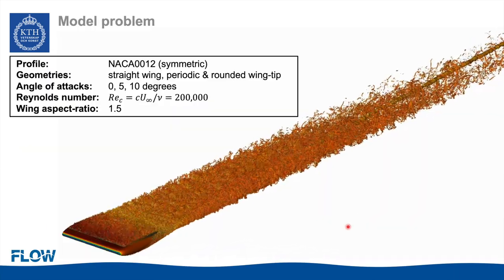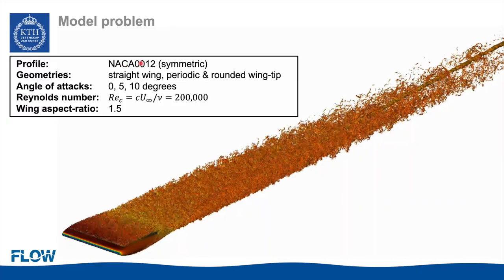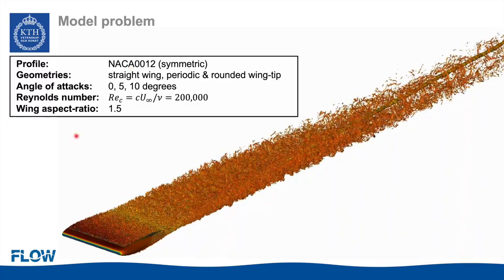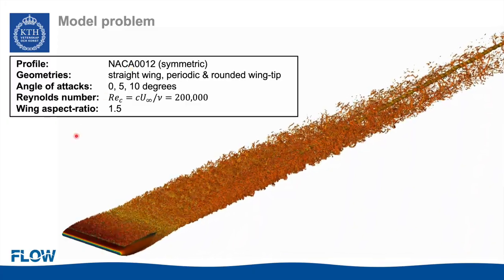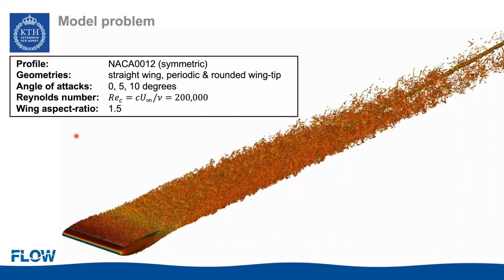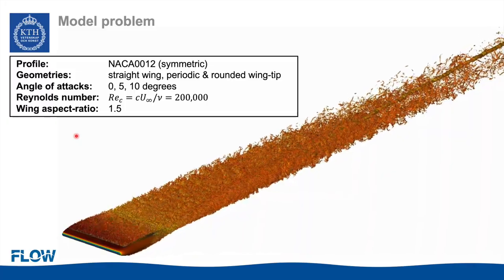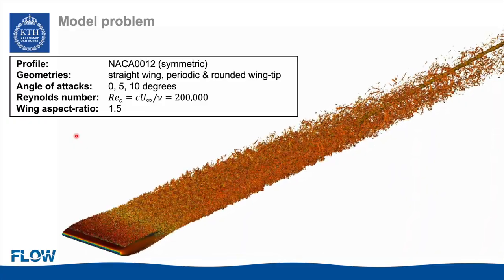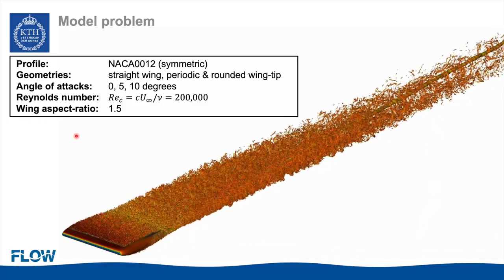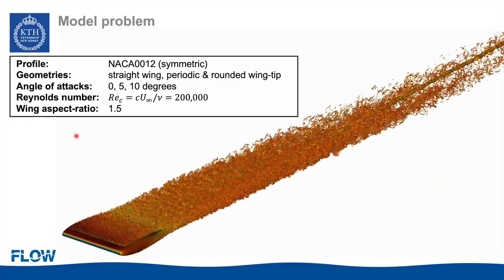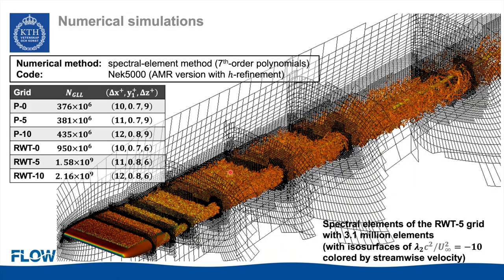For the high fidelity simulations in this study, we consider a NACA 0012 profile, which is a symmetric profile that generates no lift at zero angle of attack. We consider straight wings with rectangular planforms, uniform cross-section, and no twist, with two separate geometries: periodic as well as rounded wingtip. We consider three angles of attack — zero, five, and ten degrees — at a chord-based Reynolds number of 200,000 and an aspect ratio of 1.5.